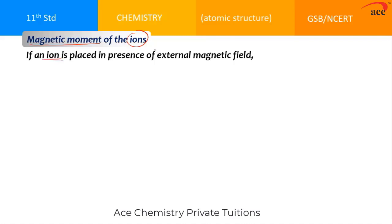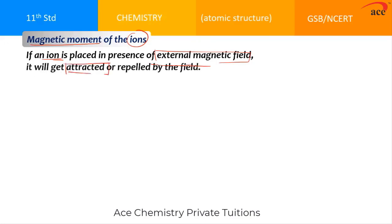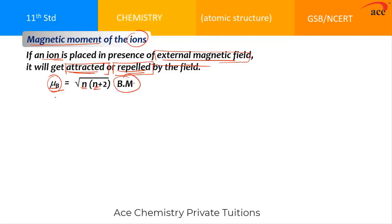If any ion is placed in an external magnetic field, it can show two different types of behaviors: that ion may get attracted towards the external magnetic field, or it may get repelled. If it is getting attracted, that substance is called paramagnetic. If it is getting repelled, that substance is called diamagnetic. To find the value of magnetic moment we use the formula μ = √(n(n+2)), where μ is the magnetic moment and the unit is Bohr magneton (BM).